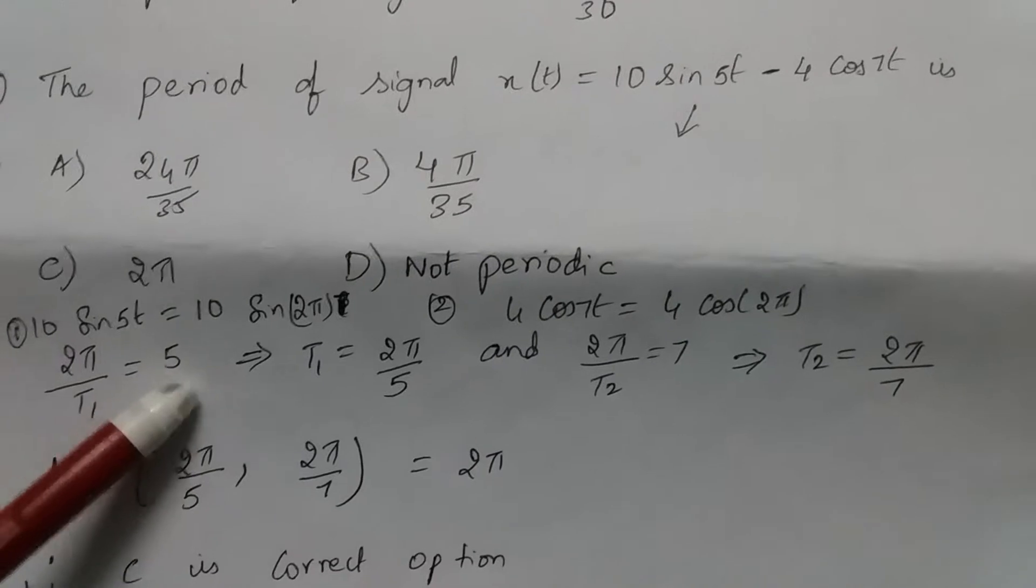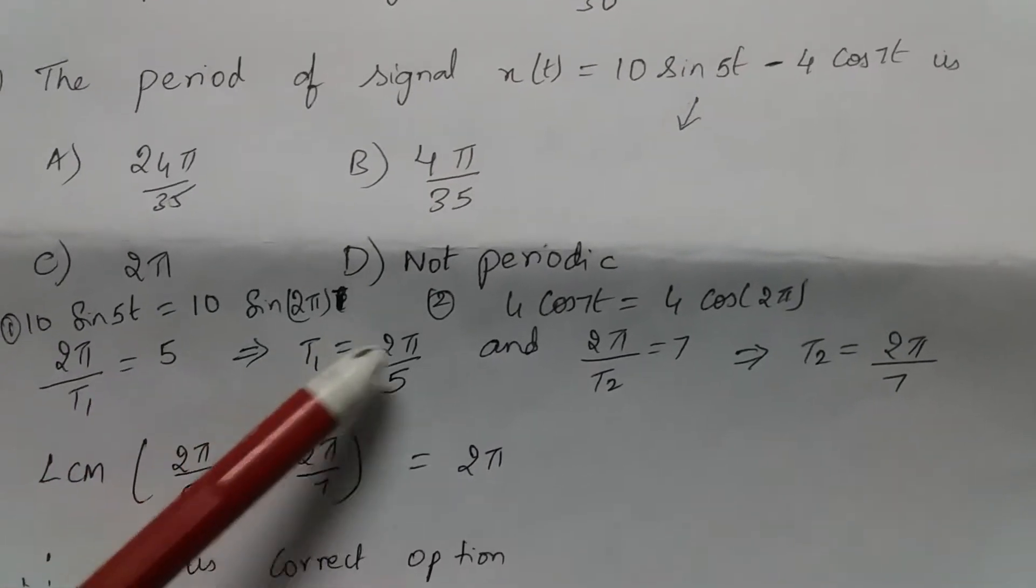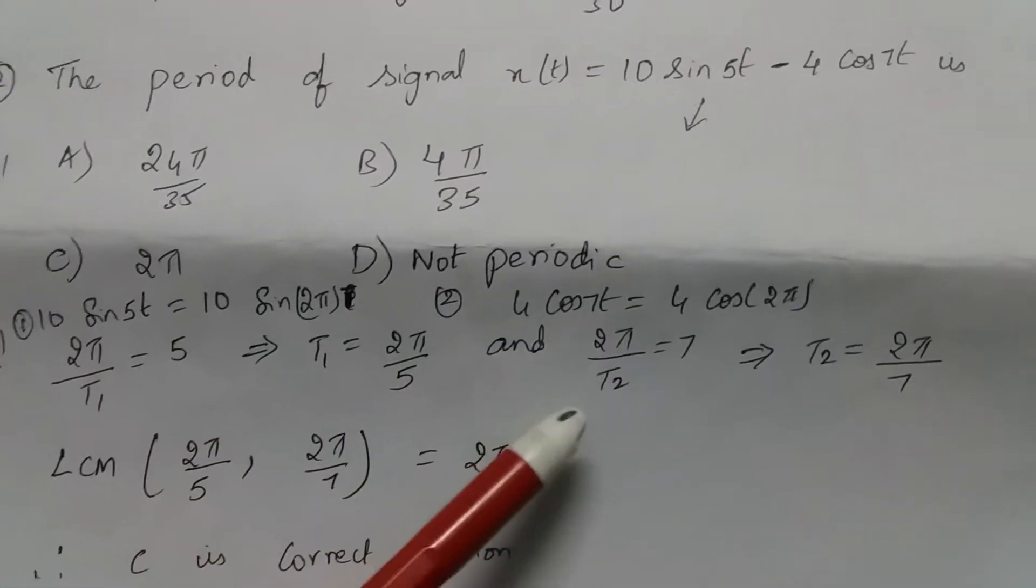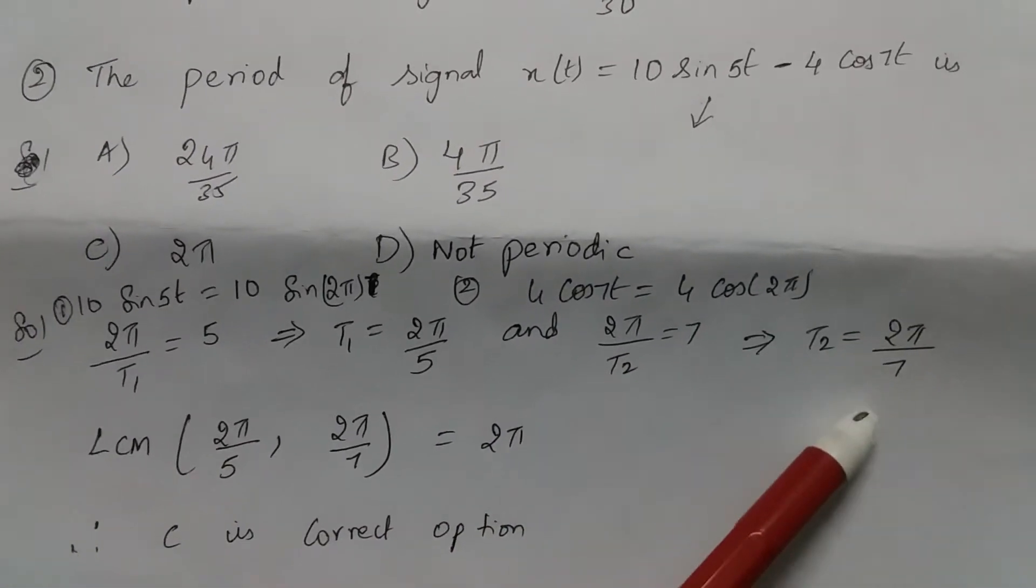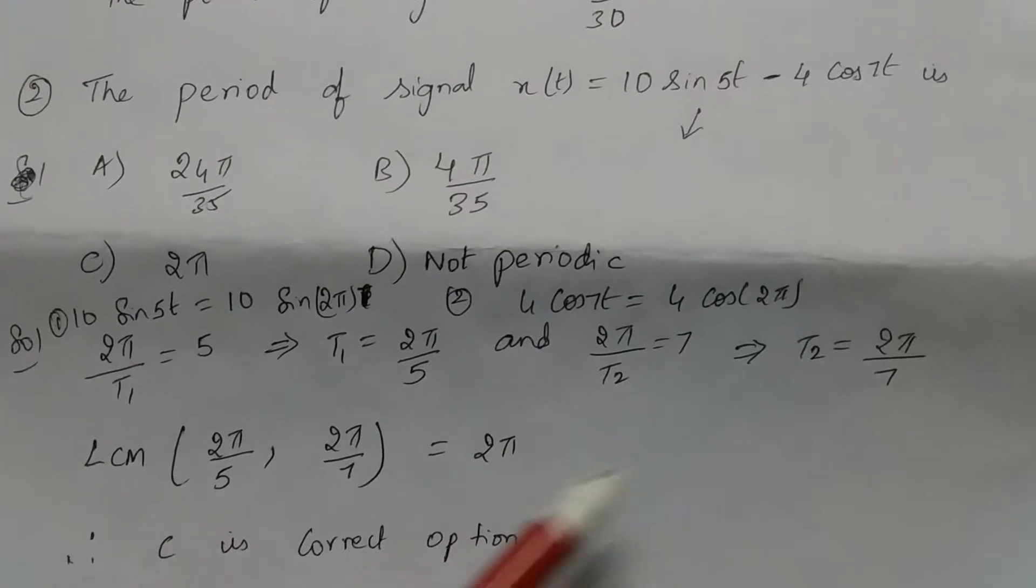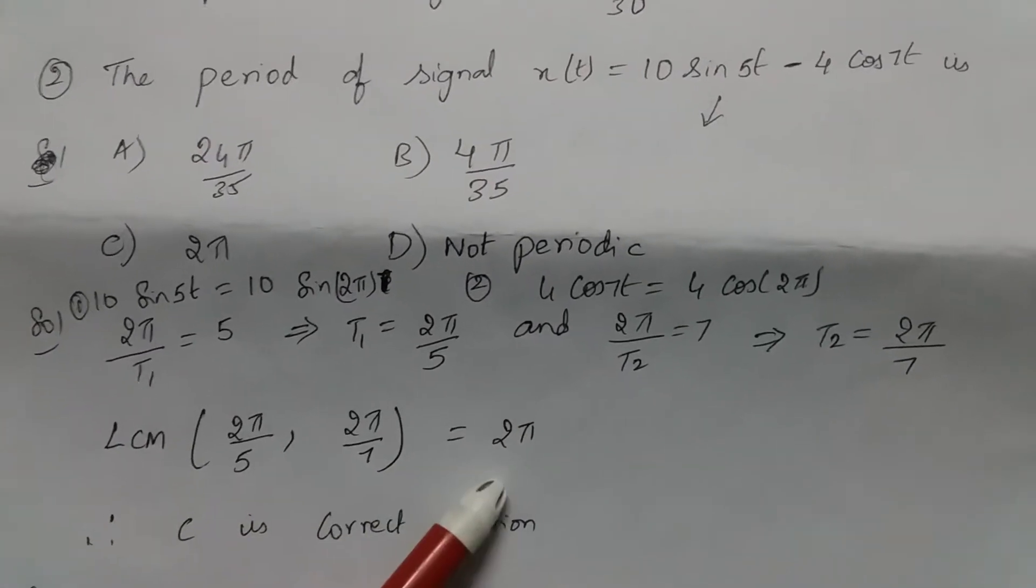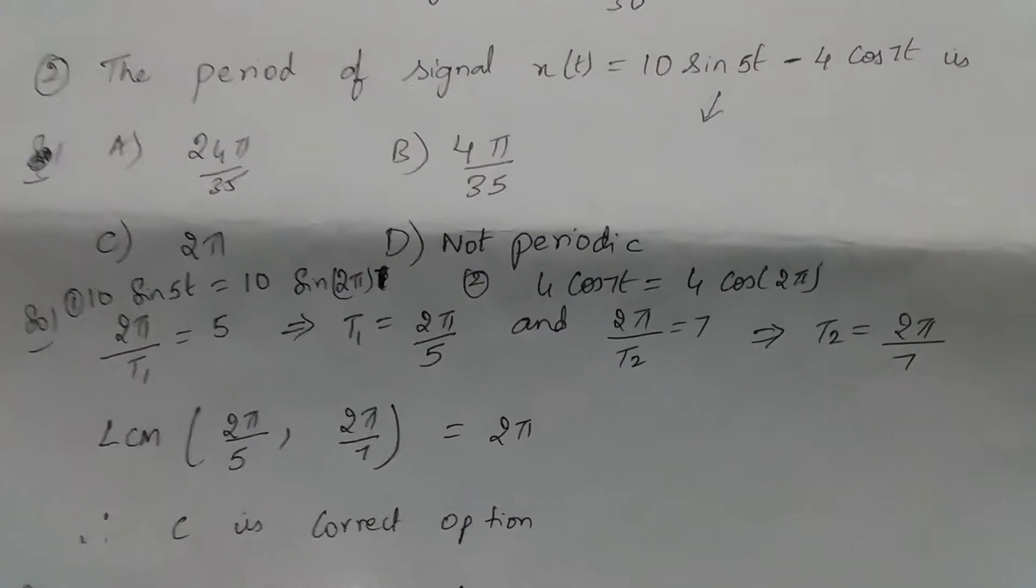So 2π by t1 is equal to 5. So t1 is equal to 2π by 5 and 2π by t2 is 7. So t2 is equal to 2π by 7. Take LCM of both. So if you take LCM of both, you get 2π. Therefore, C is the correct option.